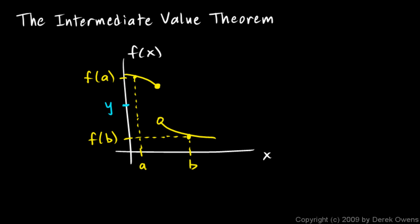The theorem could apply to a continuous section of a function — for example, if both a and b fall within a continuous interval, the intermediate value theorem would apply. But you cannot have a discontinuity in the interval. The conclusion of the intermediate value theorem, that there will be an x value corresponding to that y value, is not guaranteed to hold if the function is not continuous on that interval.